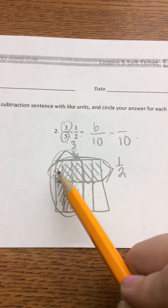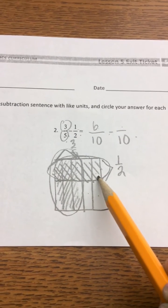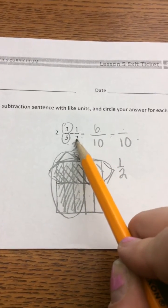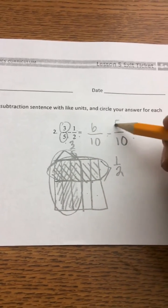In my 1/2, I've shaded 1, 2, 3, 4, 5 pieces, which means 1/2 is equivalent to 5/10.